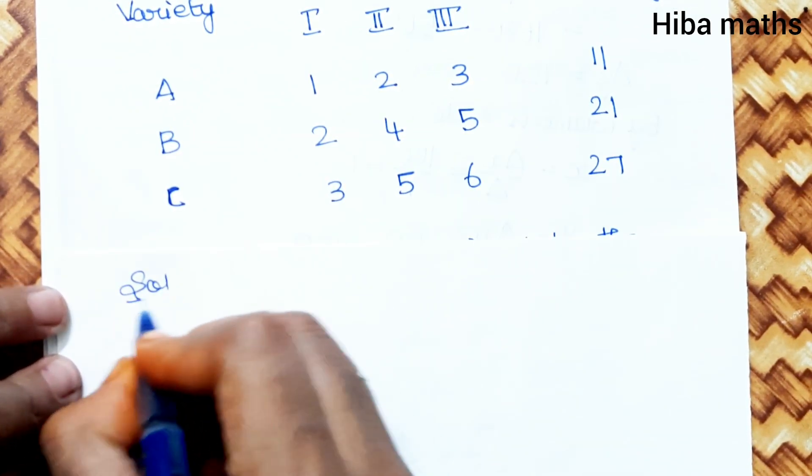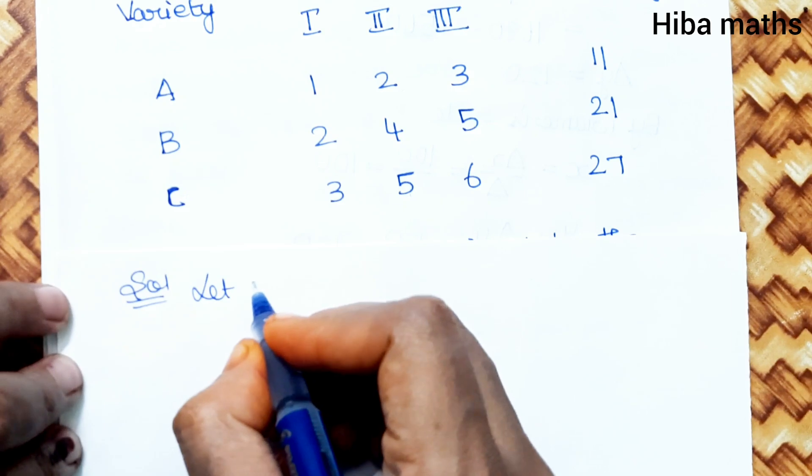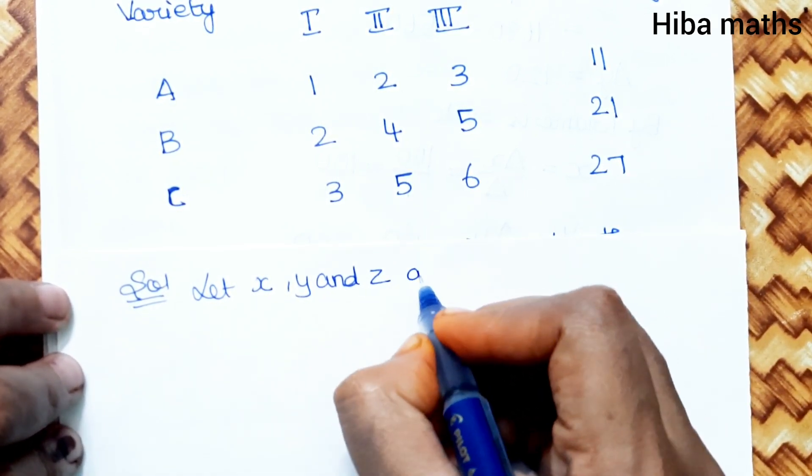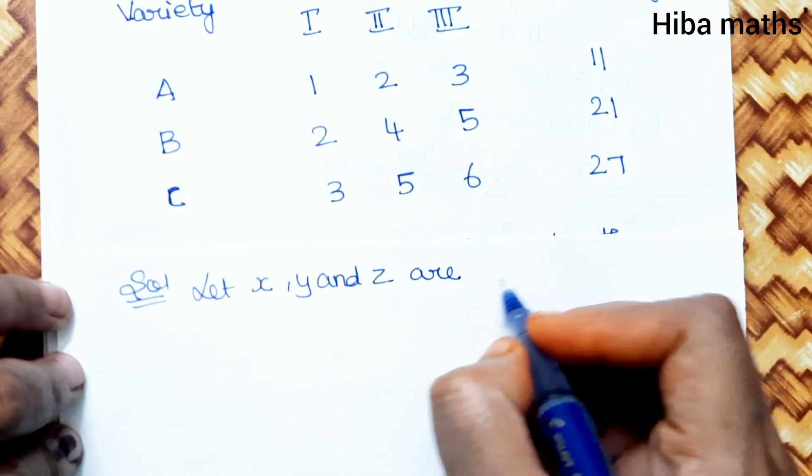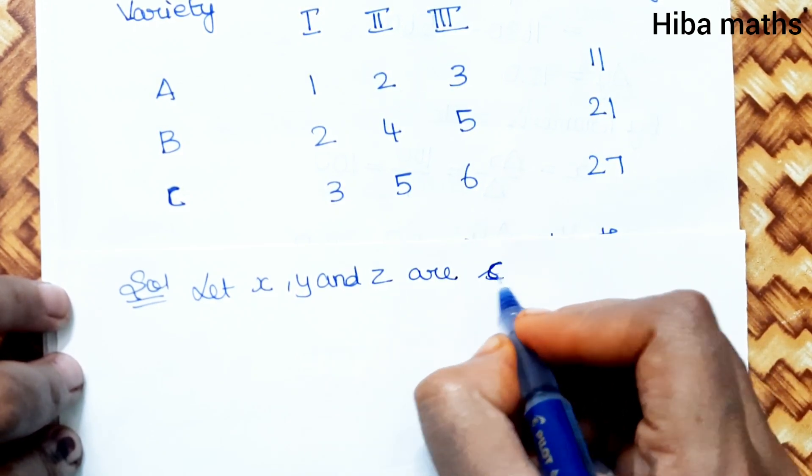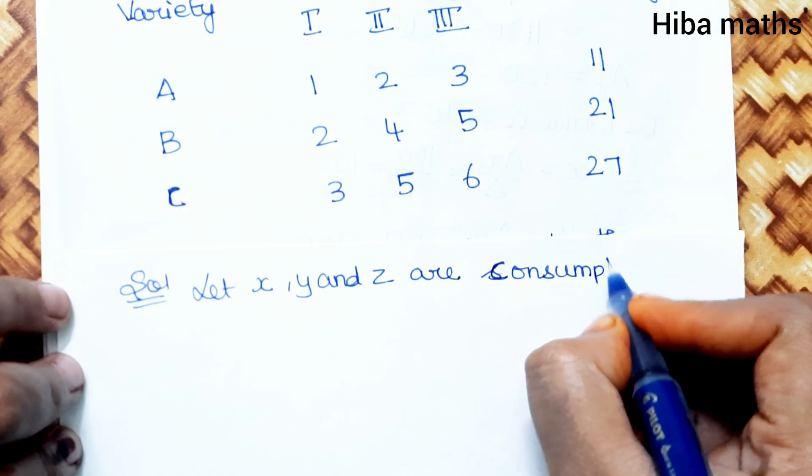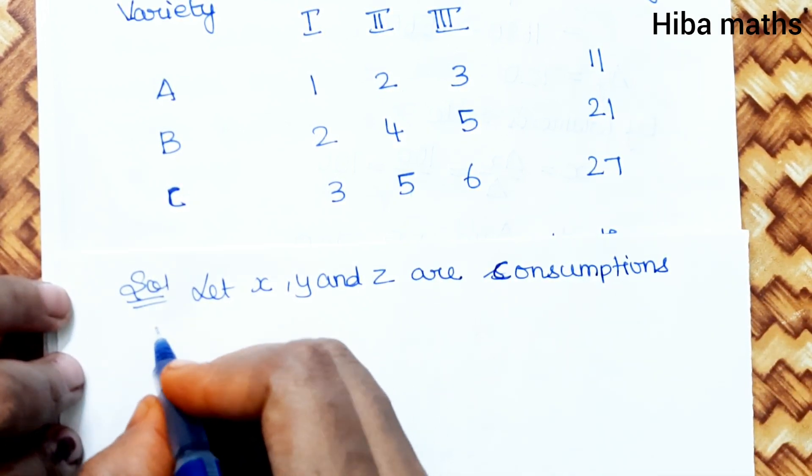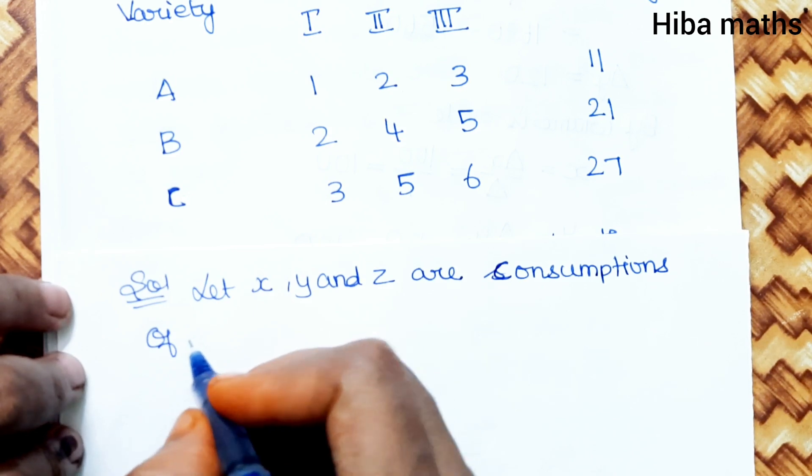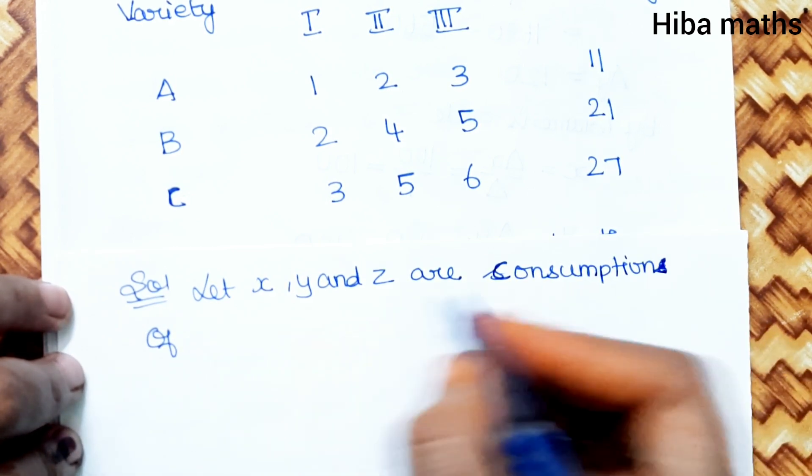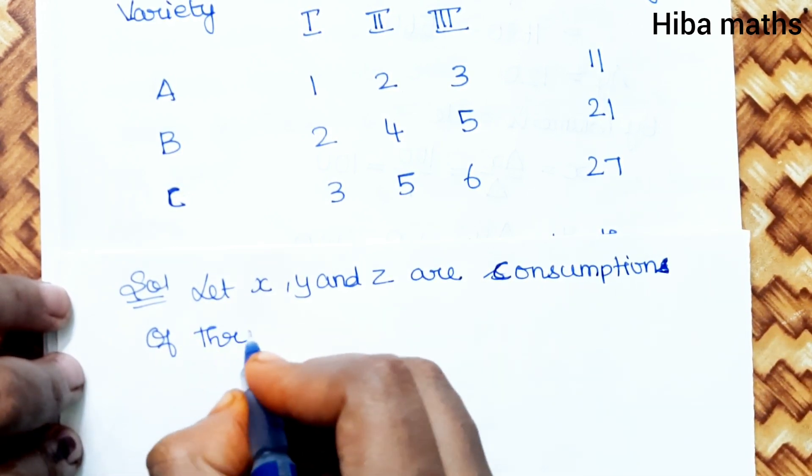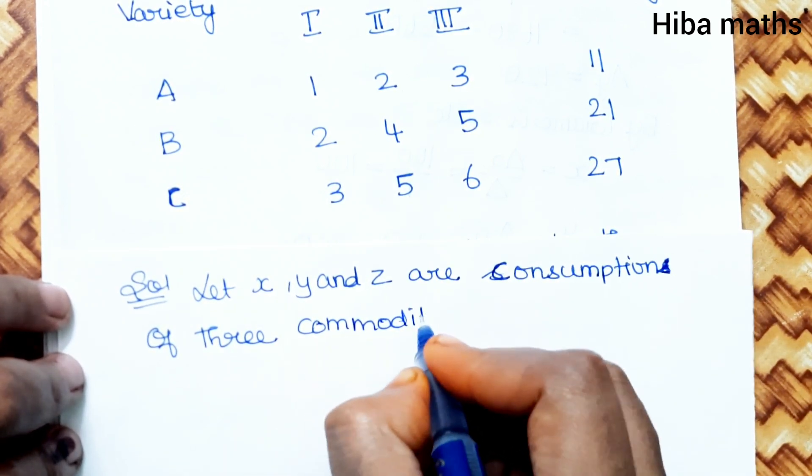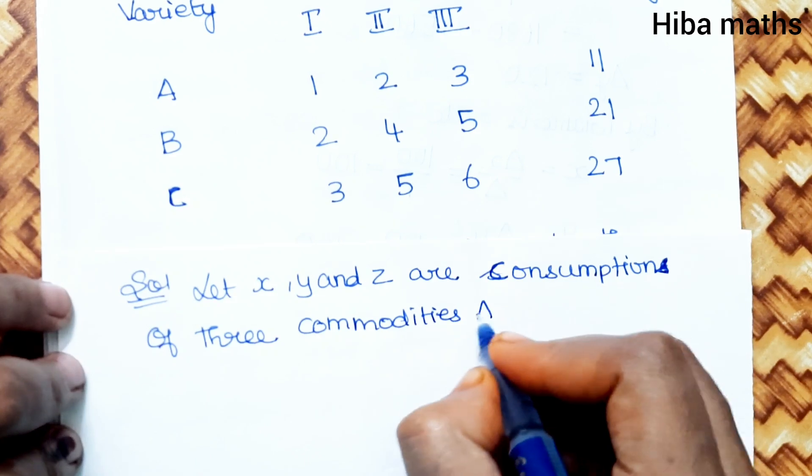Solution: Let X, Y, and Z are consumption of three commodities A, B, and C respectively.